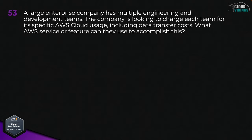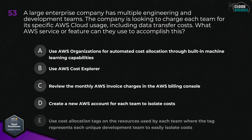Question fifty-three: a large enterprise company has multiple engineering and development teams and is looking to charge each team for its specific AWS cloud usage, including data transfer costs. Which AWS service or feature can they use to accomplish this? Options are: A, use AWS Organizations for automated cost allocation; B, use AWS Cost Explorer; C, review the monthly AWS invoice; D, create a new AWS account for each team; or E, use cost allocation tags on the resources used by each team where the tag represents each unique development team. The best answer here would be E, use cost allocation tags on the resources used by each team.